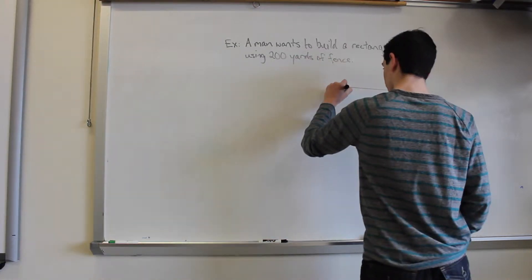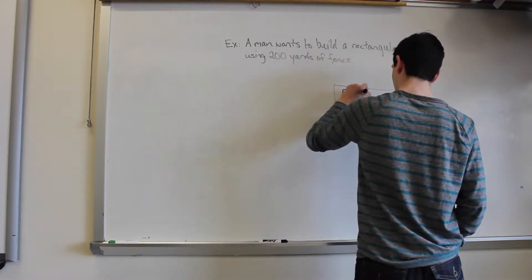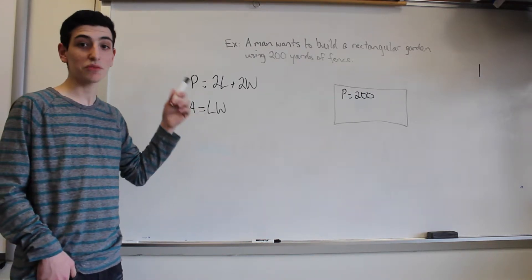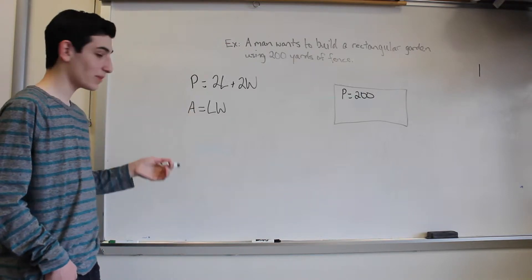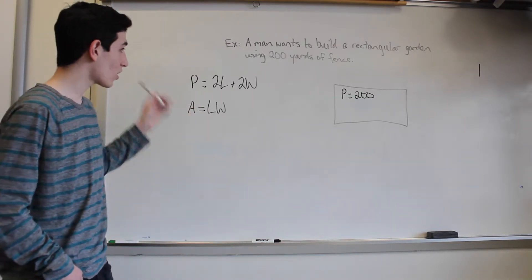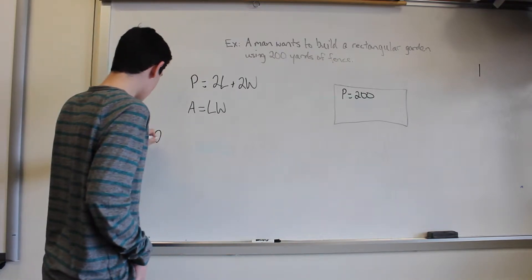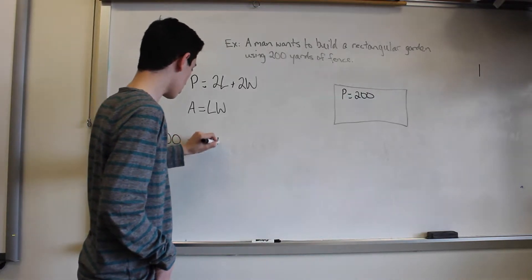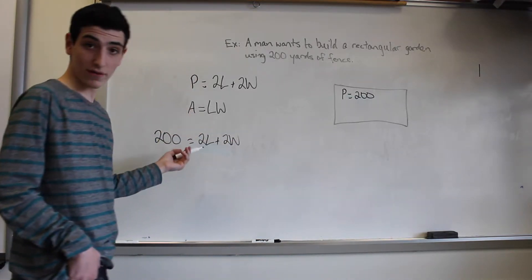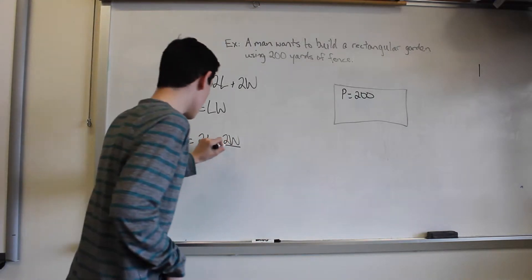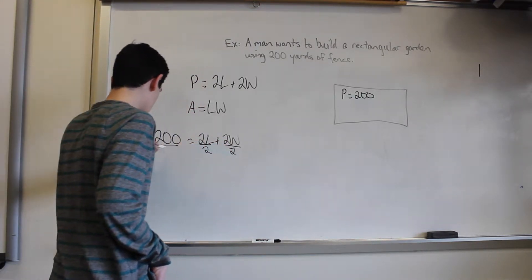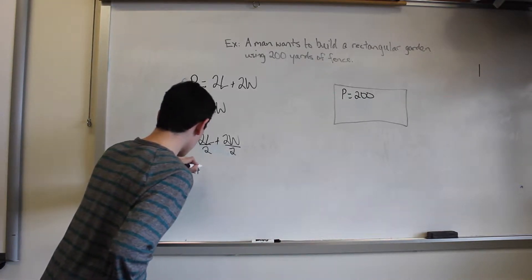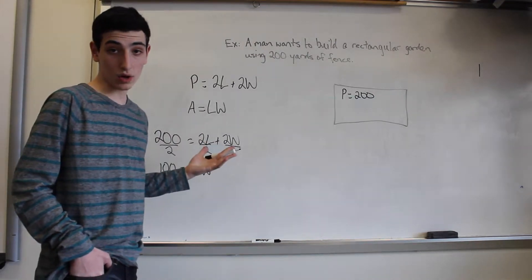There are two equations that we need in order to solve this problem. The first one being perimeter equals two times length plus two times width, and the other one being area equals length times width. Now we already know that perimeter is 200, so we'll go ahead and say 200 equals 2L plus 2W. Since we have a common factor of 2, we can divide 2 from all of our terms, so we have 100 equals length plus width.